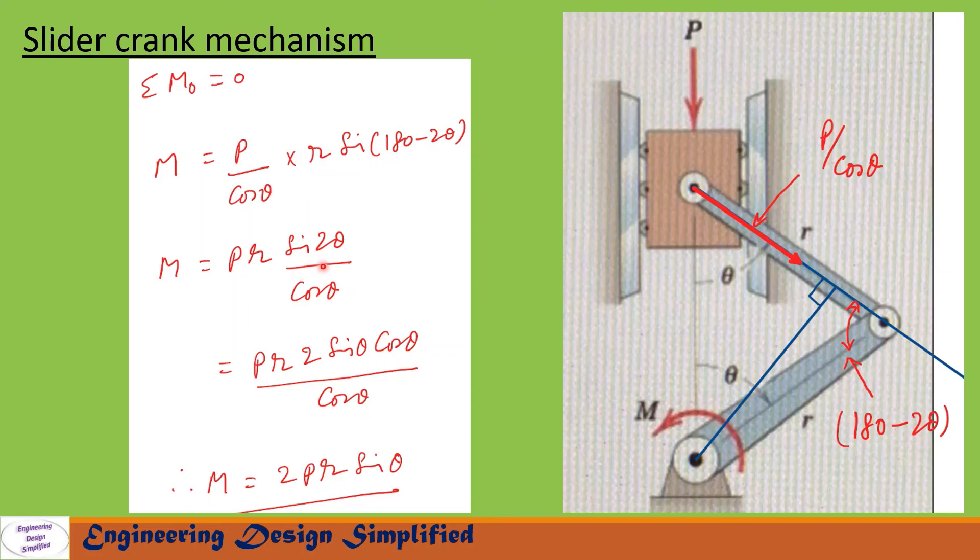Since sin 180 minus 2 theta can be written as sin 2 theta, this equation will become M equal to P into r into sin 2 theta by cos theta.